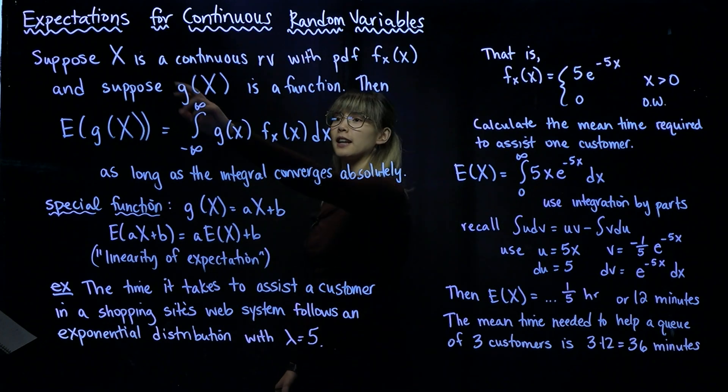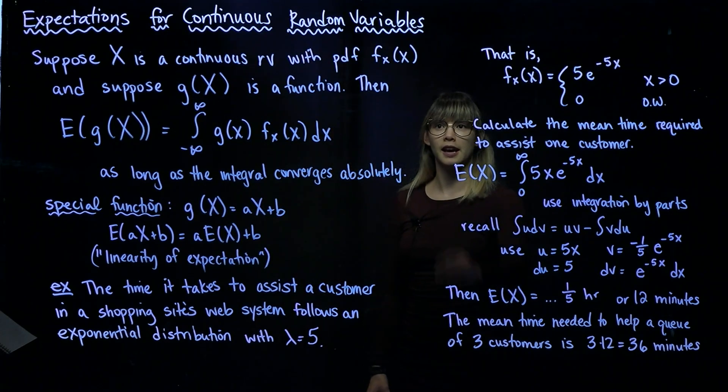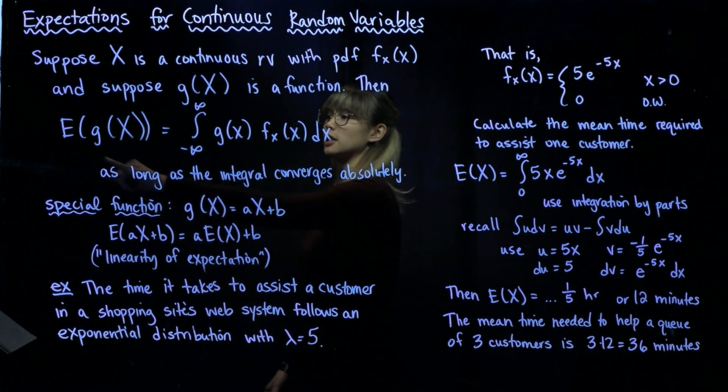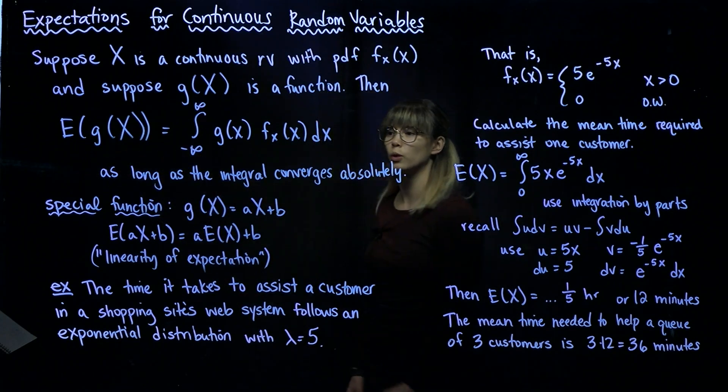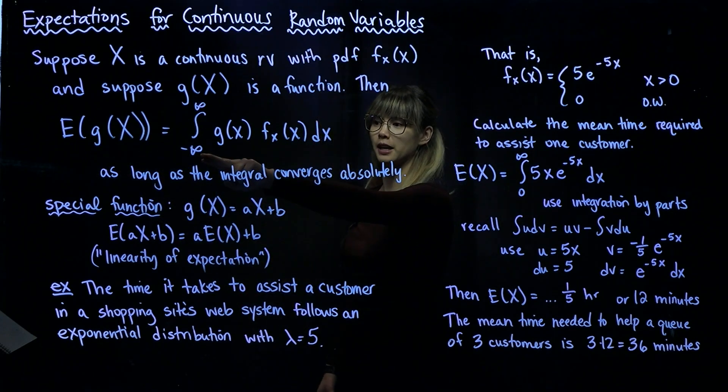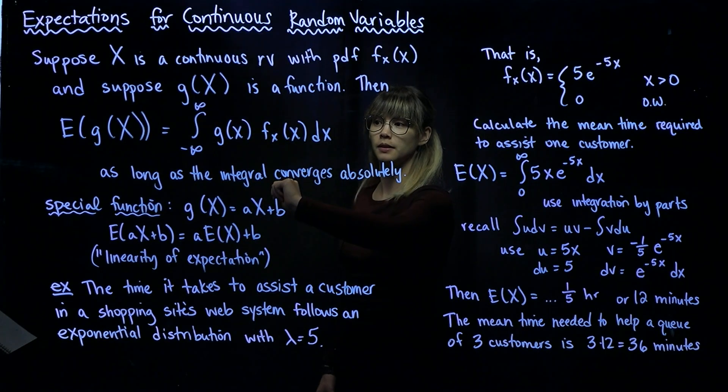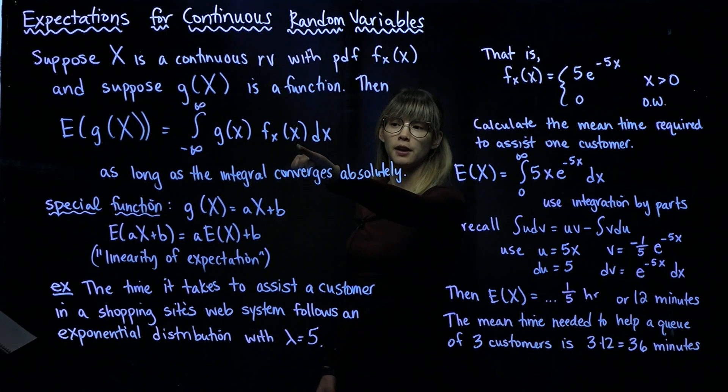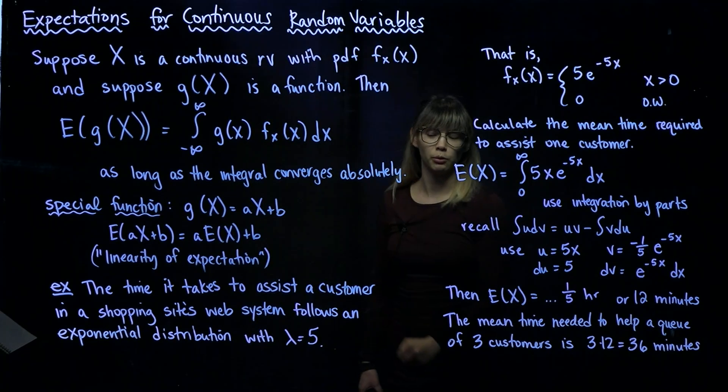So suppose that X is a continuous random variable with PDF f_X(x), and suppose that g(X) is a function of our random variable. Then if we want to calculate the expected value of g(X), we're going to integrate from negative infinity to positive infinity: g(x) times the PDF f_X(x), and we're going to integrate with respect to x.